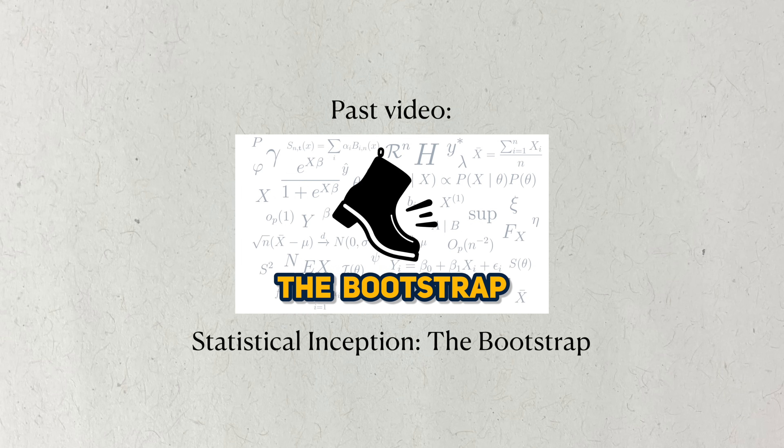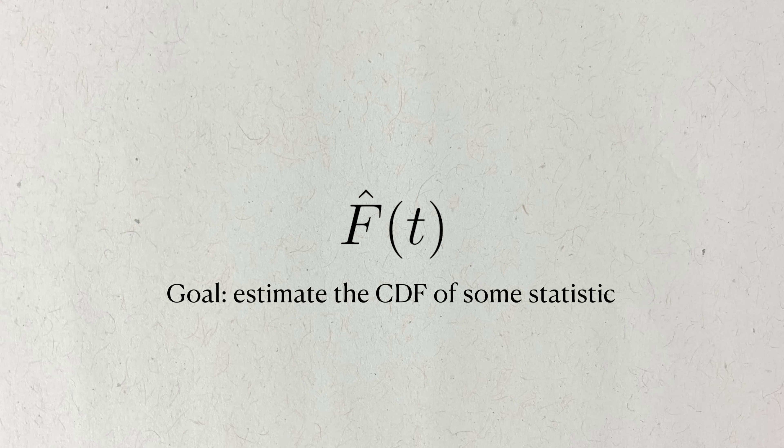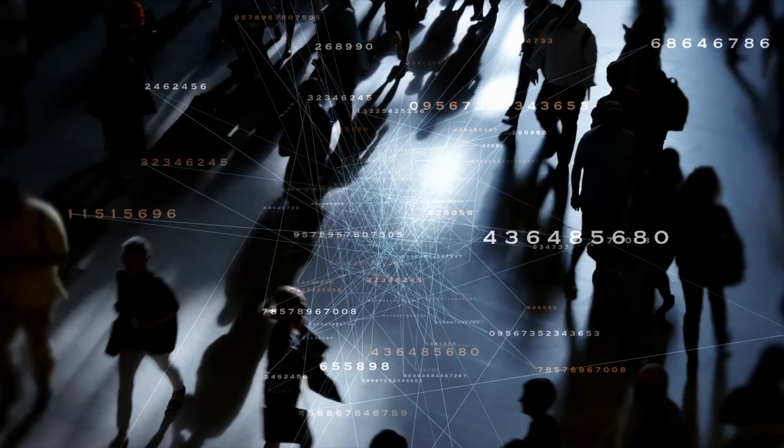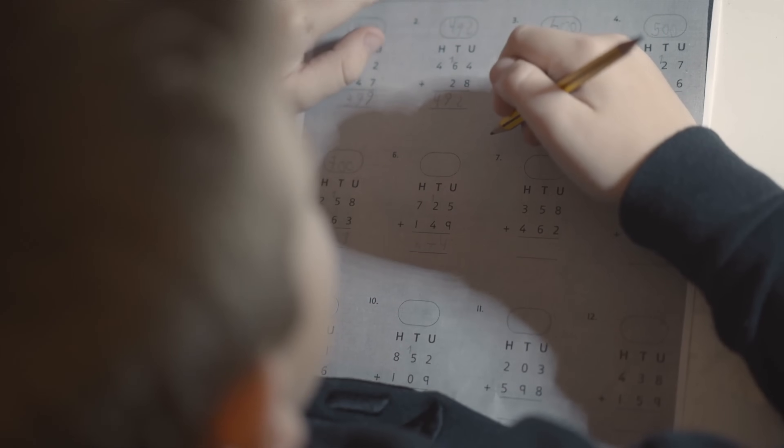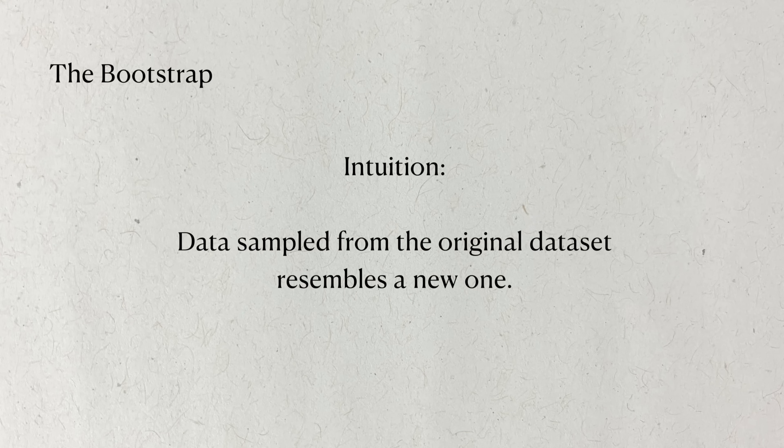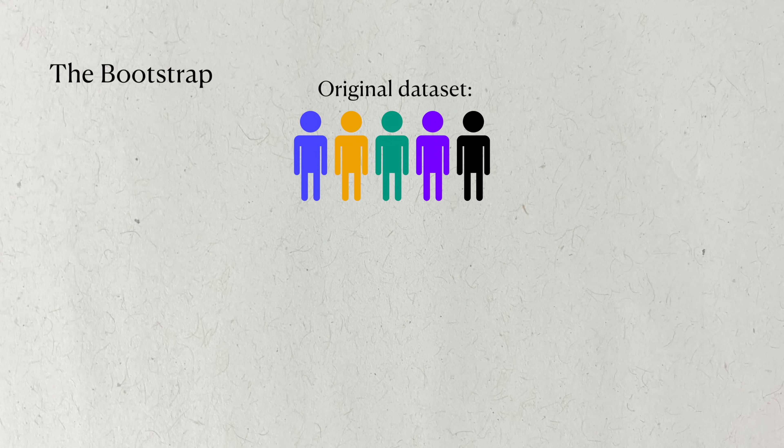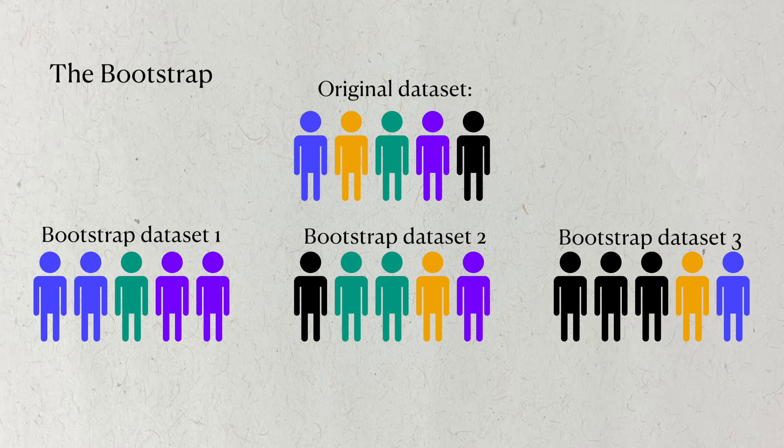If you've been with my channel for a while, you may be familiar with this one already. The bootstrap is a general algorithm for estimating the sample distribution of a statistic. Ordinarily, this would require gathering multiple datasets, which no one has time for, or it would require mathematical derivation, which I don't have time for. Rather than do either of these, the bootstrap takes the interesting approach of reusing data. From a single dataset, the bootstrap generates several bootstrap datasets by sampling with replacement from the original. For each of these bootstrap datasets, a statistic of interest is calculated, and their distribution can be derived from this entire collection.